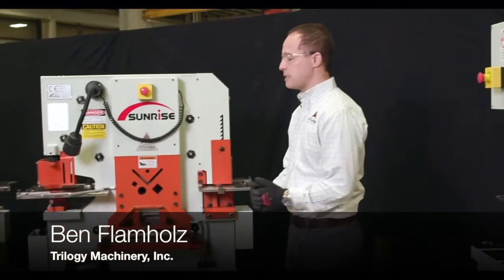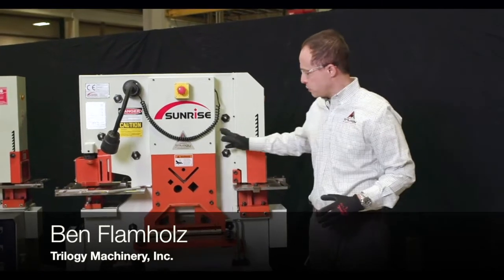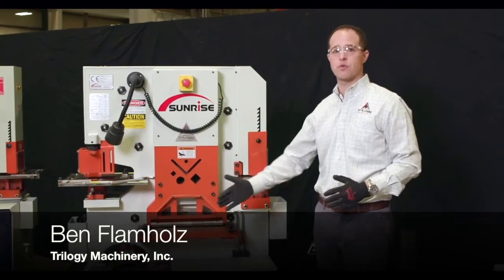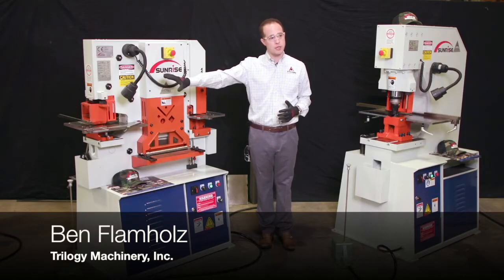The Sunrise K-Series is our vertical design machine. This machine is 66 tons, but all the tonnage moves directly up and down. So that means you have 66 tons on the punch.